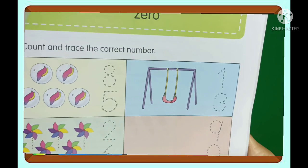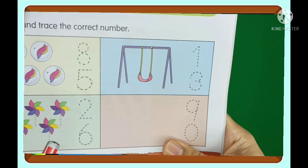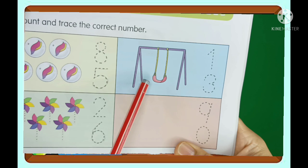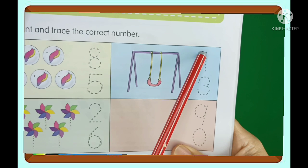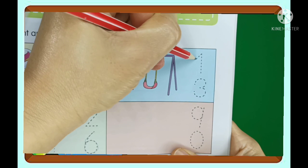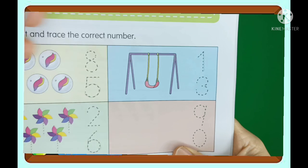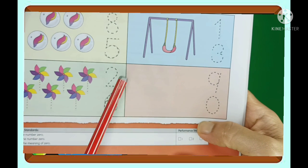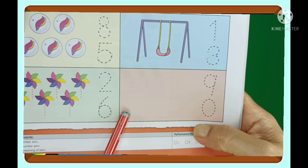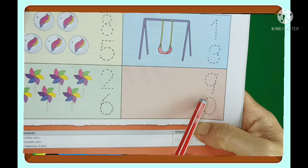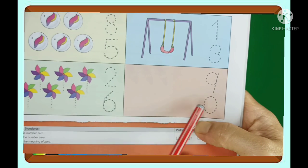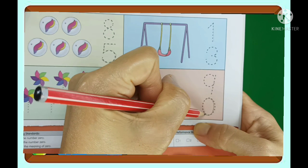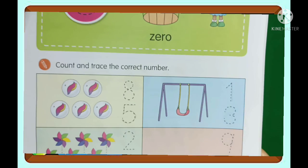And next, we have here the picture of a swing. Oh, look! How many swings are here? It's only one. So you're going to write number one here, one there. And look here — an empty space. What do you mean by that? It's zero. So nothing in this, so we're going to circle or write number zero.